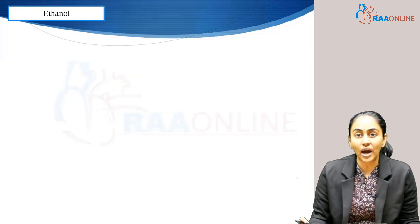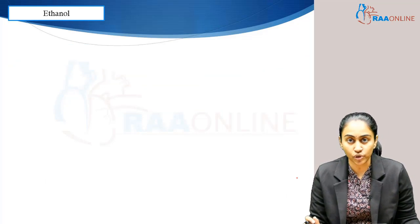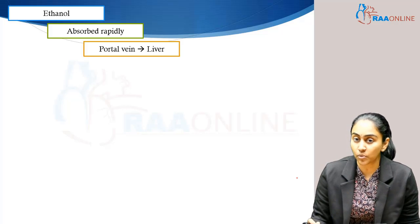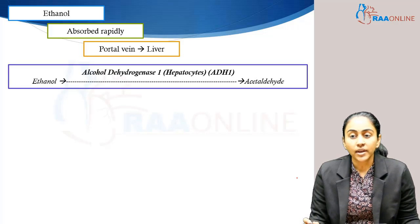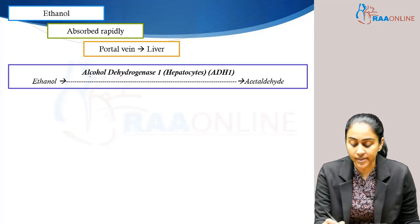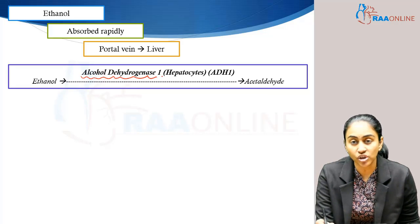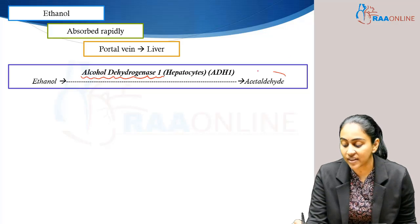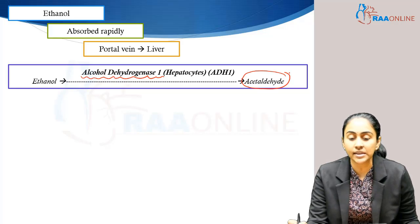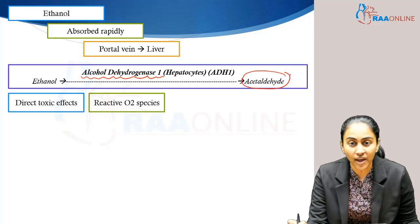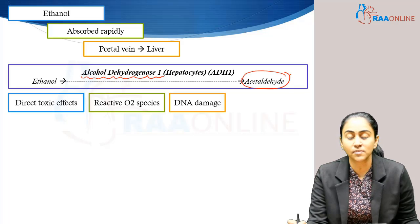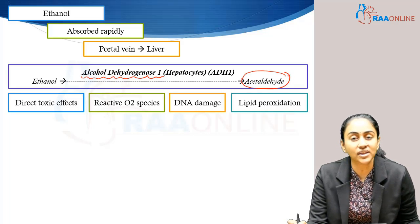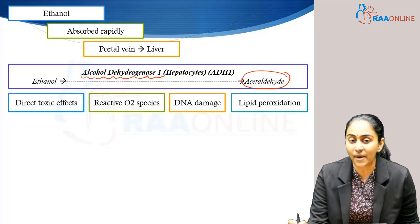Let us look at how alcohol causes liver injury. The ethanol consumed is rapidly absorbed and taken up by the portal vein into the liver. Ethanol is acted upon by an enzyme called alcohol dehydrogenase 1, present in the liver, and is converted into acetaldehyde. Acetaldehyde is the culprit because it has direct toxic effects — it produces reactive oxygen species, causes DNA damage and lipid peroxidation, and through all of these it results in significant hepatic injury.